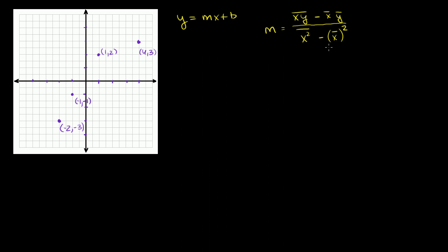One way to memorize it: the first terms have the mean of the combined things — you multiply x times y first, then take the mean; you multiply x times x first, then take the mean. The second terms are finding the means of the individual components and then multiplying: mean of x times mean of y, mean of x times mean of x. The y-intercept b is just going to be equal to the mean of y minus m times the mean of x, because we know that the point (mean of x, mean of y) lies on the regression line.